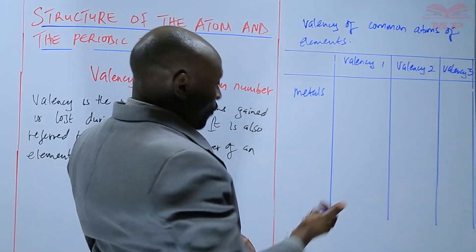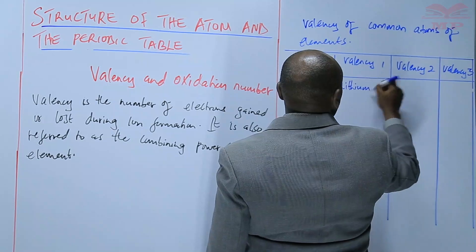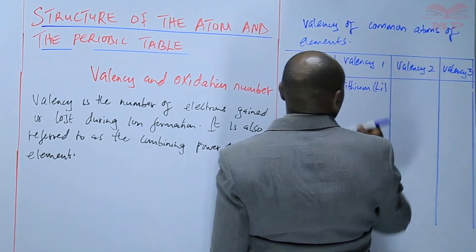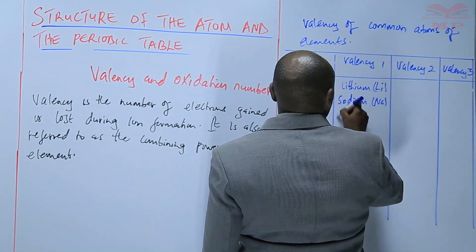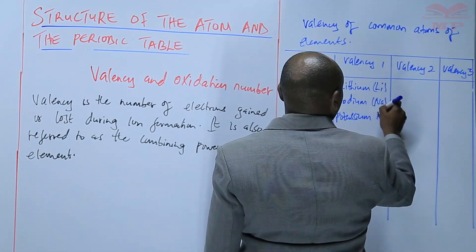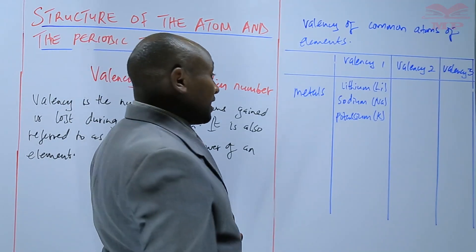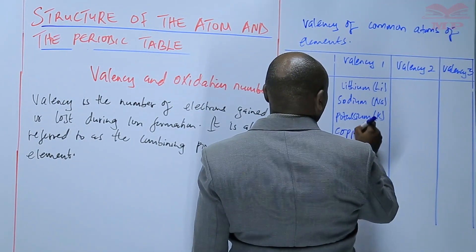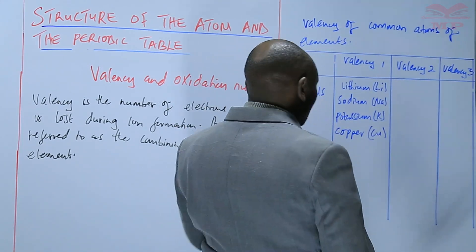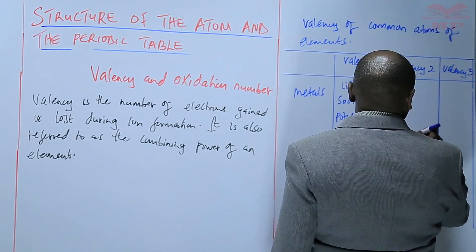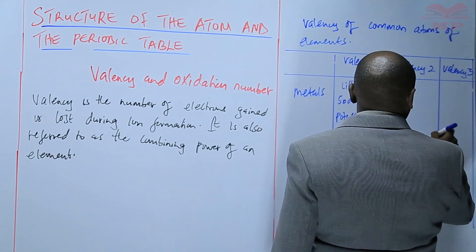The metals that have a valency of 1 include lithium, sodium, and potassium — basically group 1 elements. There are also those with more than one valency, such as copper. Copper can have a valency of 1 or 2, so you have to specify: is it copper I or copper II?